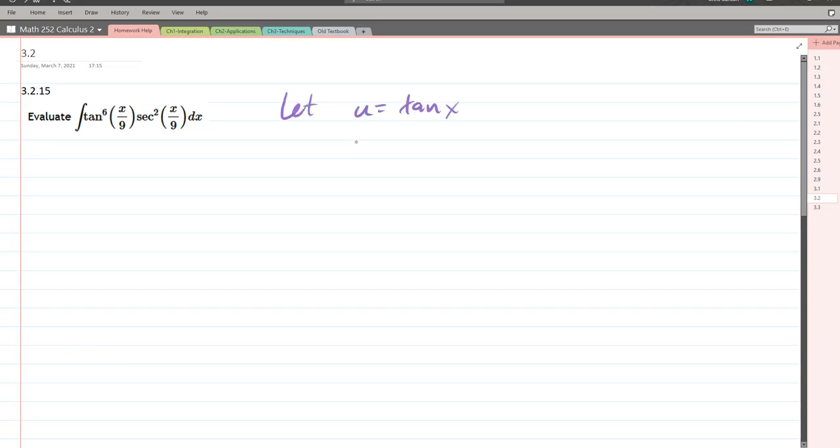First thing to do when you make a u-substitution is find the derivative of u. The derivative of tangent is secant squared x dx. Now you can see we have secant squared. What I didn't do correctly was account for that x over 9, so let's go back a couple steps and get that x out of there.